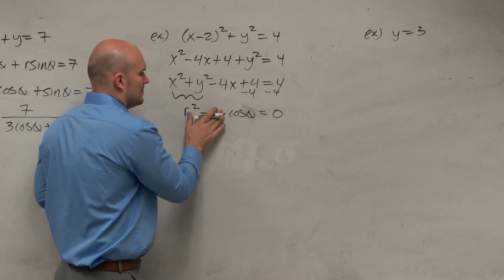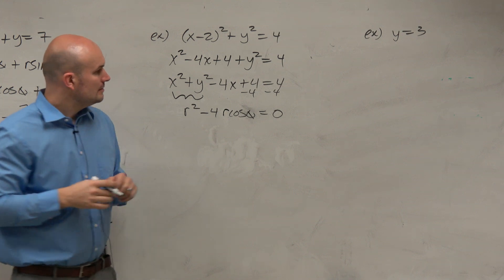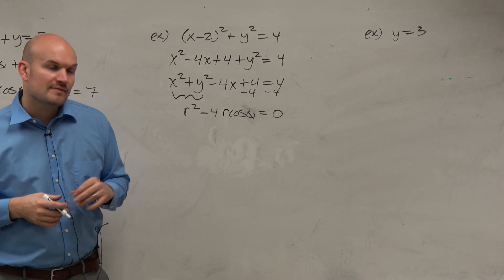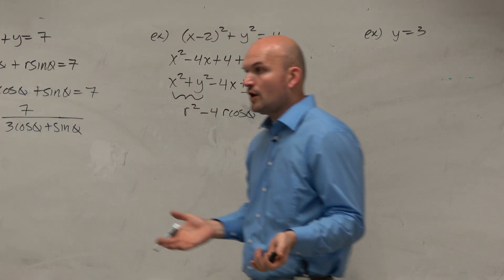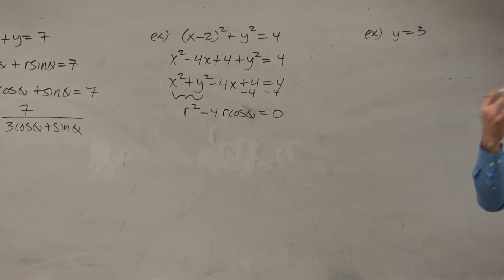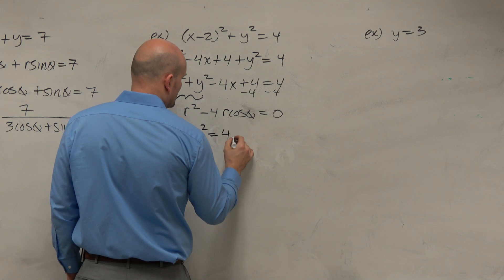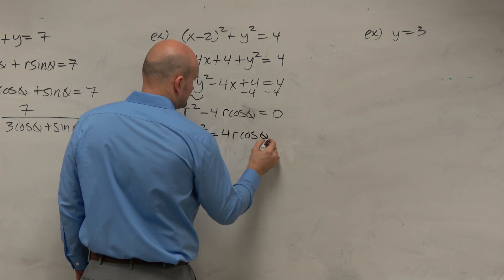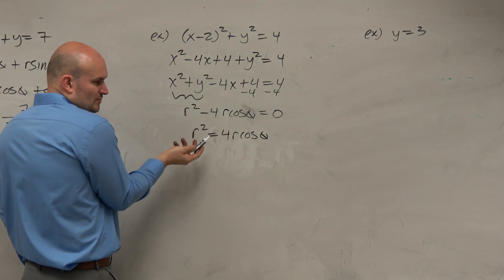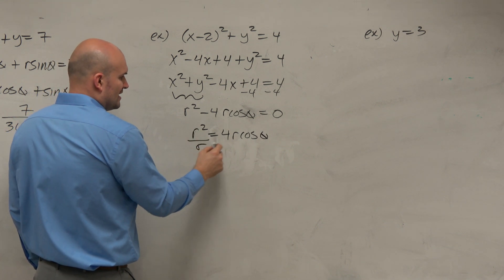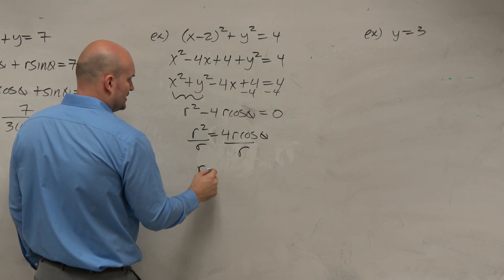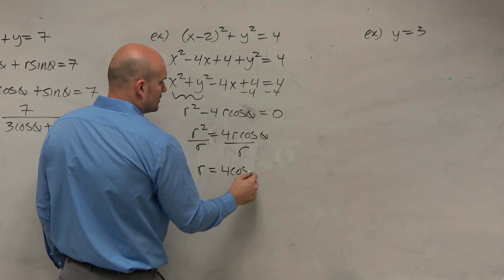That's r cosine of theta. And then, again, guys, we want to solve for r, right? So technically that is now in polar form, but if you want to solve for r, we can set r squared equal to 4r cosine theta. And then, really, r squared is r times r, so if we divide by r, we get r equals 4 cosine theta.